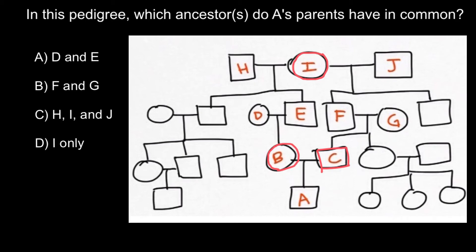So our answer would be answer D. Individual I only would be the common ancestor of both individuals B and C, who are the parents of individual A.